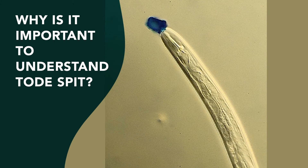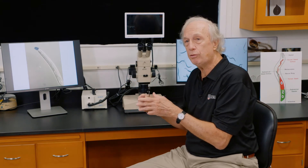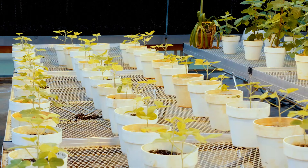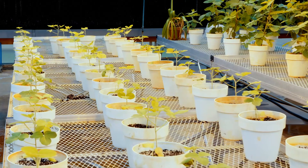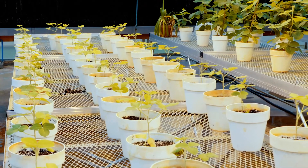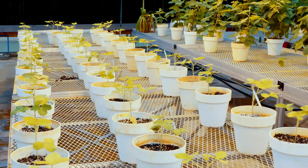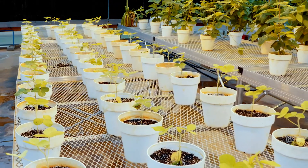It matters because if we know how the nematode is infecting the plant — the tools that the nematode is using to infect the plant — then perhaps we can design novel resistant genes to block that. The only way we can inhibit that nematode spit from functioning is to make a transgenic plant that makes something to inhibit the spit.